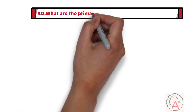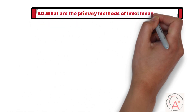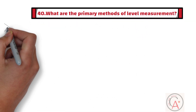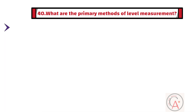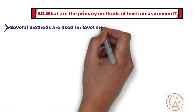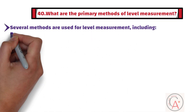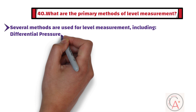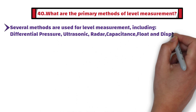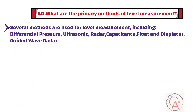Question 40: What are the primary methods of level measurement? There are several methods of level measurement, which include differential pressure, ultrasonic, capacitance, float and displacer, and guided wave radar.